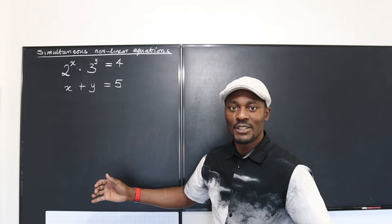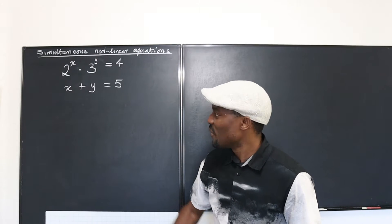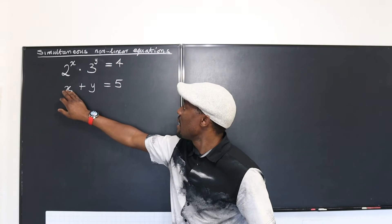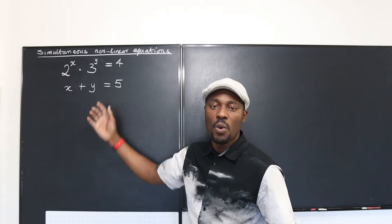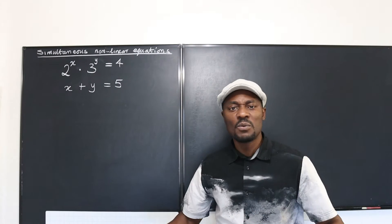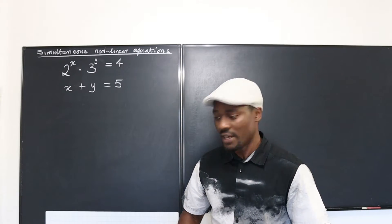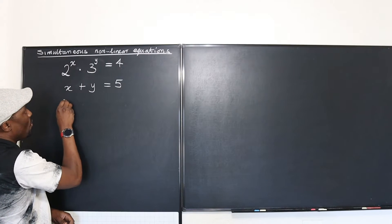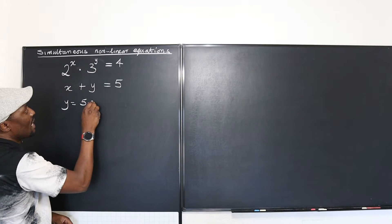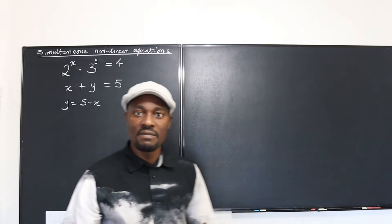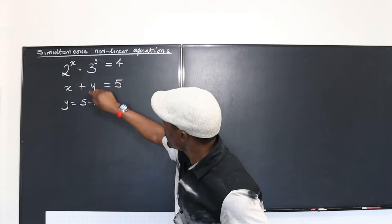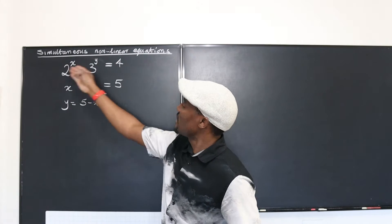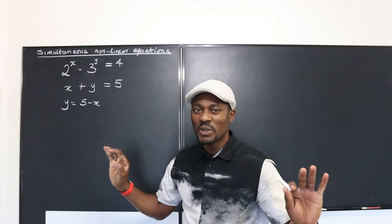Let's do substitution. If you look at the second equation, you can actually isolate x and say x is equal to 5 minus y, or you say y equals 5 minus x. So from this, we can say y equals 5 minus x. Now that I've isolated my y, I will take this 5 minus x and replace the y in the first equation, giving an exponential equation containing only x.